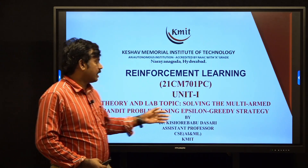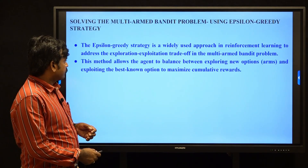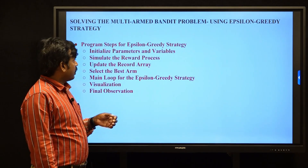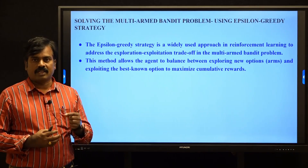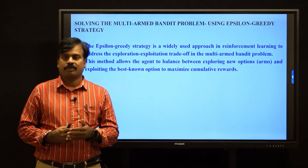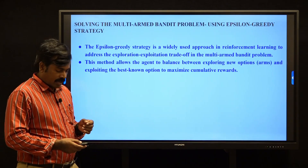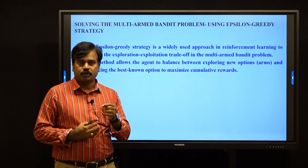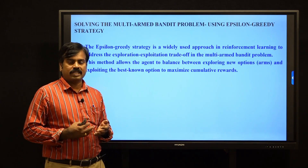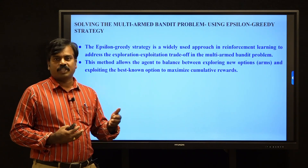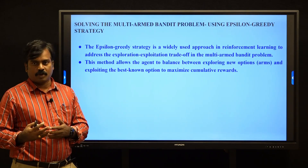So we go to the epsilon greedy strategy to balance exploitation and exploration. In the epsilon greedy strategy, we take two probabilities: one for exploration and one for exploitation. We regularly take 0.2 as the epsilon value — 0.2 means 20% of times we go to exploration operations, and the remaining 0.8 times we go to exploitation. Epsilon and 1 minus epsilon together balance both exploration and exploitation.